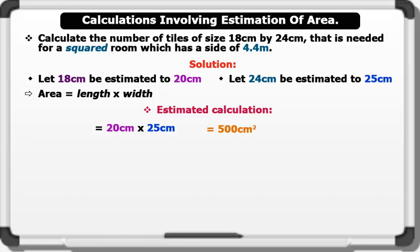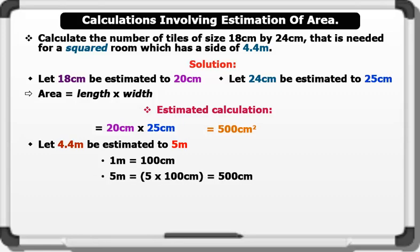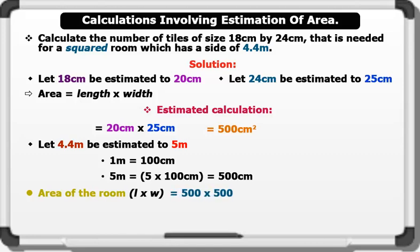Now let's calculate the area of the square room. Let 4.4 meters be estimated to 5 meters. Note that 1 meter equals 100 centimeters. Therefore, 5 meters equals 500 centimeters. Since it's a square room, the area of the room equals 500 centimeters times 500 centimeters, which equals 250,000 cm squared.